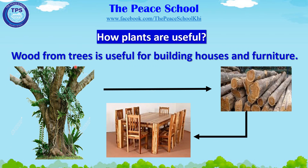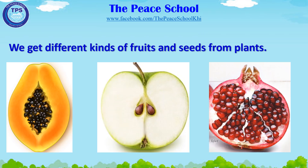Wood from trees is useful for building houses and furniture. We get different kinds of fruits and seeds from plants.